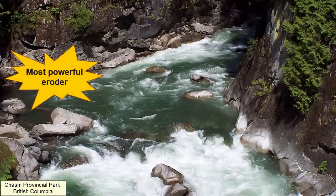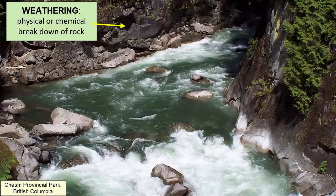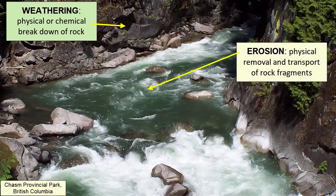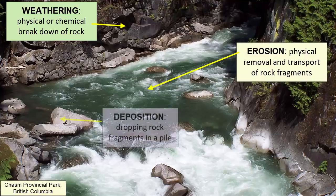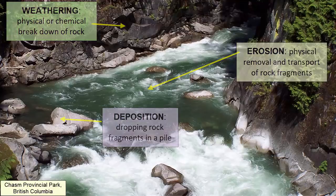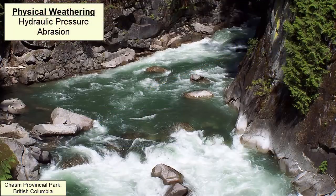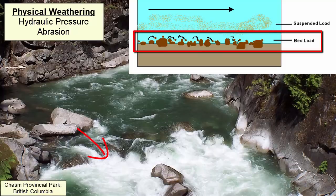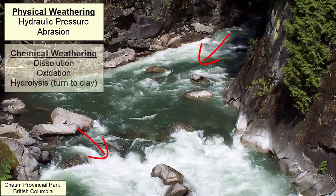Why is running water such a powerful eroder of the land? Weathering is the process of physical or chemical breakdown of rock. Erosion is the transport of weathered debris or sediment from one location to another. Deposition is the dropping of sediment into piles. Rivers physically weather rock through two primary methods: hydraulic pressure and abrasion. As water moves downhill, its weight and velocity put pressure on the rocks, gradually expanding existing cracks. Sediment carried along the base of a river — known as bed load — also scrapes and abrades rock surfaces.